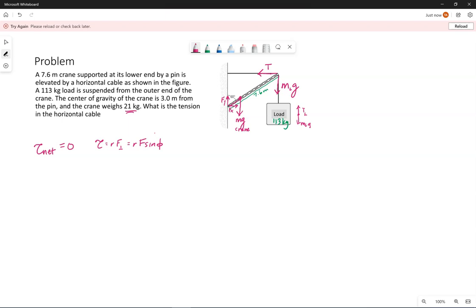My recommendation is to put the rotation axis where you have the most unknown forces and forces you don't care about, per se, that you're not calculating for. So I'm going to put the rotation axis down here where the pin is attached. And so that means there will be no torque due to this Y component of the force from the pin. There's going to be no torque due to the X component from the pin, and that's because R is zero. So there will be a torque due to this tension force, there will be a torque due to the load, and there will be the torque due to gravity on the crane itself.